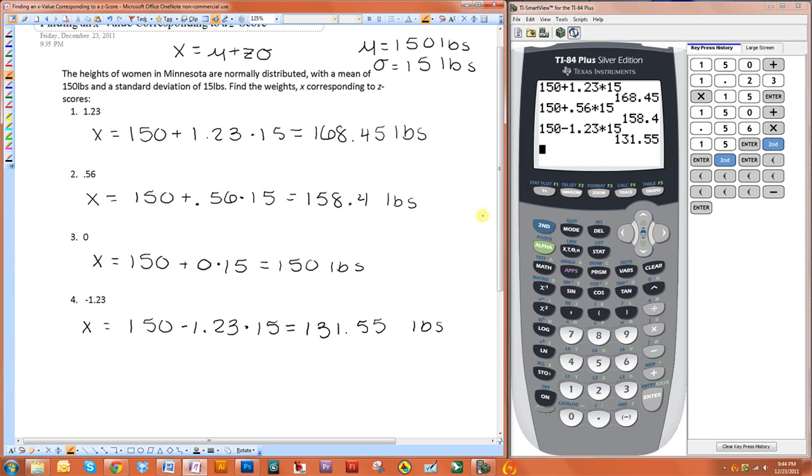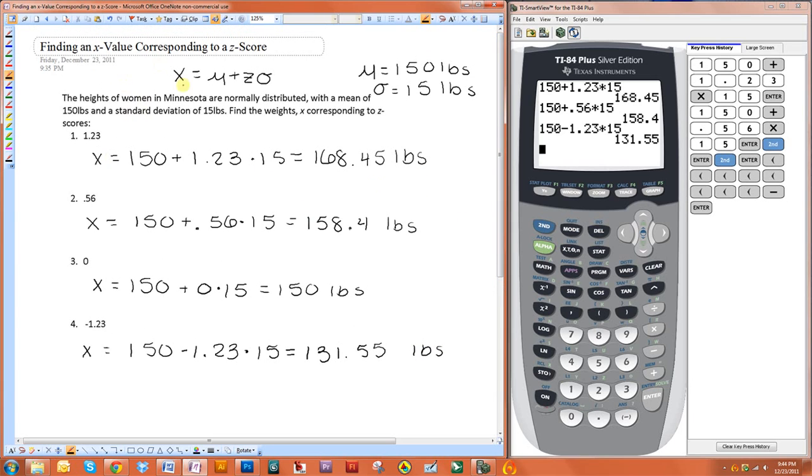Now one thing you should always double-check is to make sure your x values make sense. If z is zero, x should be the mean. If z is positive, x should be more than the mean. Notice both of our positive ones were greater than 150 pounds. And if z is negative, x should be less than the mean. Notice it was less than 150 pounds. So we're good. Let's take a look.